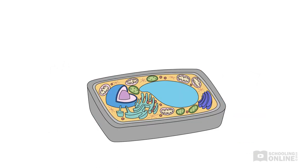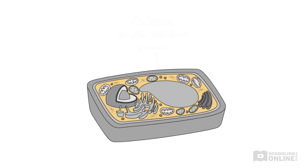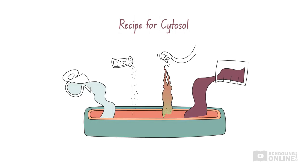Inside the cell membrane lies the protoplasm, which consists of everything inside the cell membrane. All the processes essential to the plant's survival occur in the protoplasm, such as photosynthesis and respiration. The protoplasm consists mostly of cytosol, the intracellular fluid that organelles float in. The cytosol is where most metabolic reactions occur — chemical reactions that occur in living organisms. The cytosol is a gel-like fluid composed of water, salts, enzymes, and organic molecules.